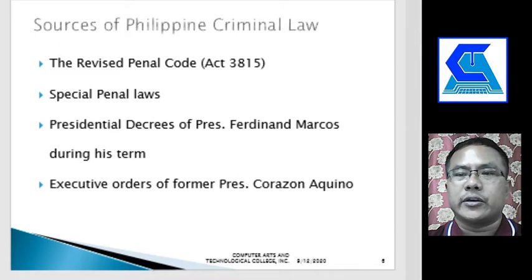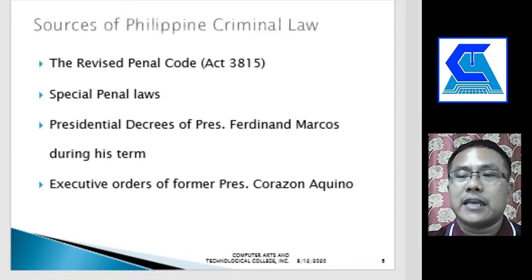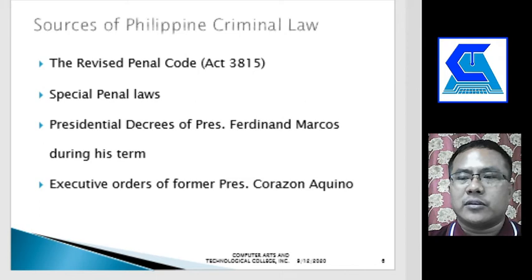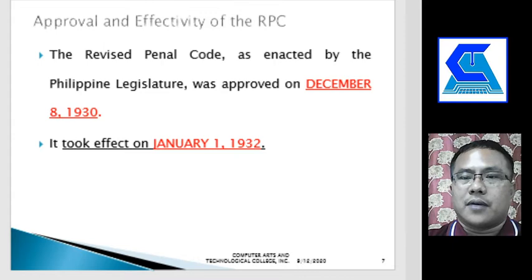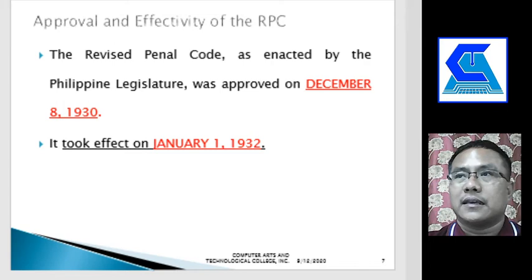Let us proceed with the sources of Philippine criminal law. We have the Revised Penal Code, also known as Act 3815 — this is what we are studying now, and it is just one of the sources of Philippine criminal law. Other sources include special penal laws, presidential decrees, and executive orders. The Revised Penal Code was enacted by the Philippine legislature on December 8, 1930, and took effect on January 1, 1932.